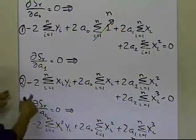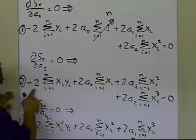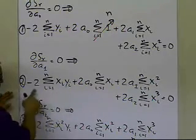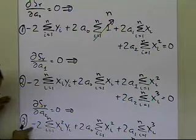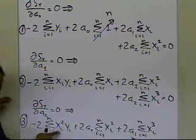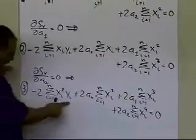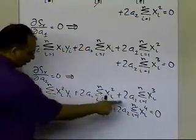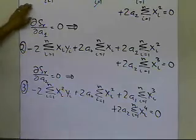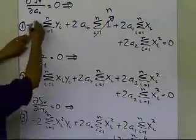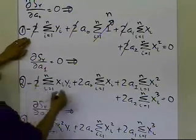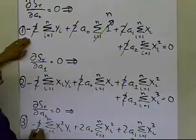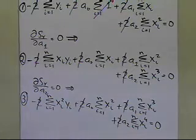In the second equation, the known quantities — all the x's and y's — will go to the right-hand side, and the terms with a0, a1, and a2 stay on the left-hand side. Same thing for the third equation: xi's and y's are known, so those go to the right-hand side, and I keep a0, a1, and a2 on the left. Now I'm going to get rid of the factor of 2 by dividing both sides by 2, since the right-hand side is 0, which simplifies things a bit.